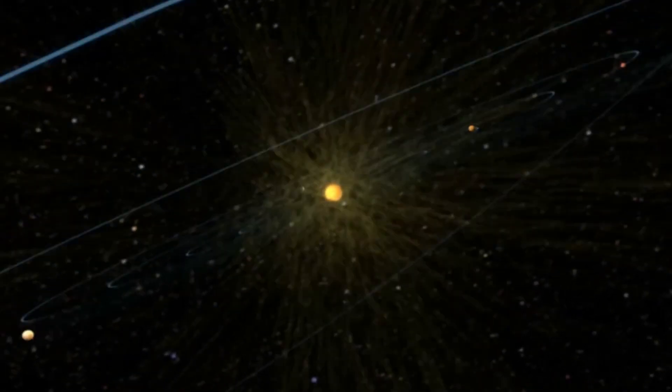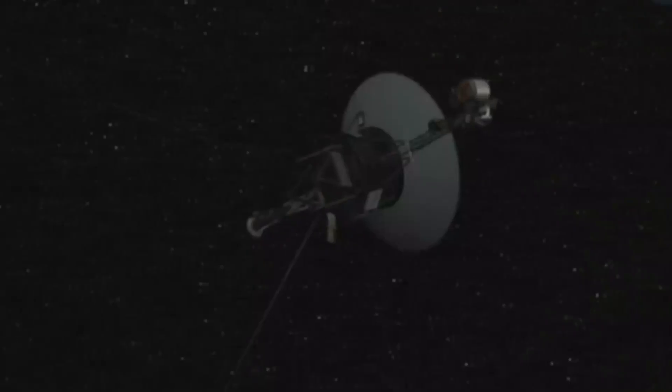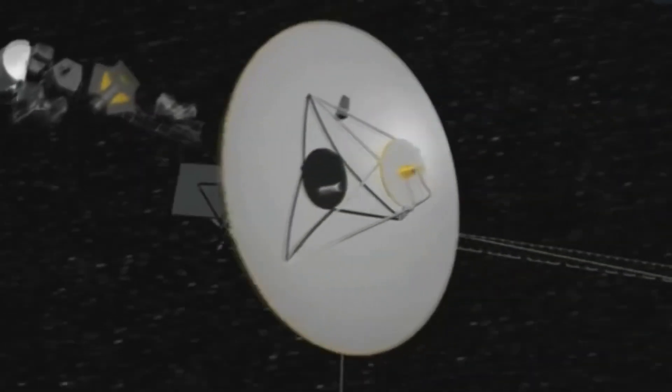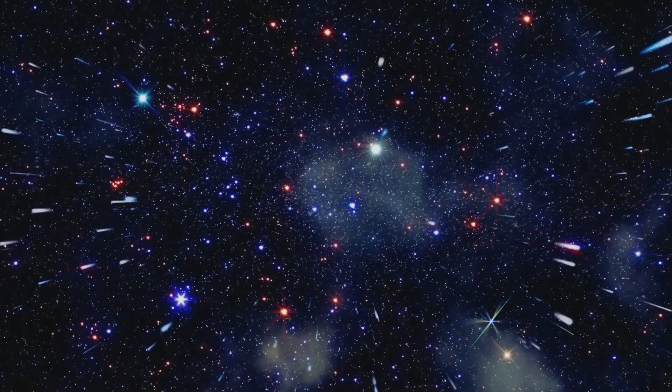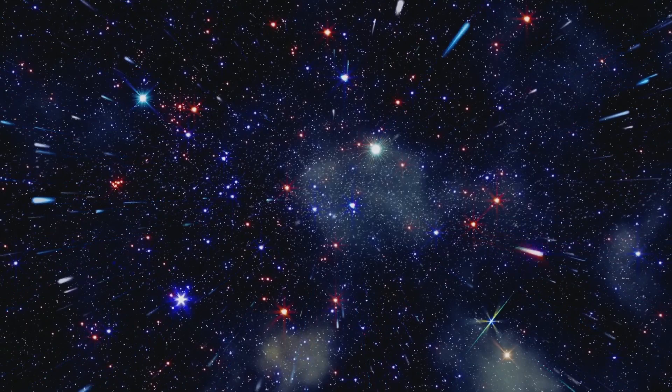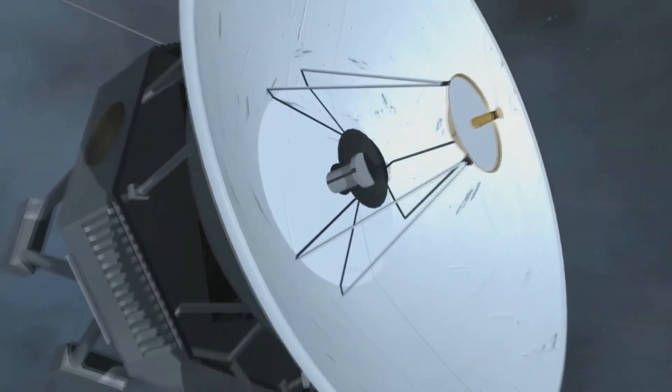The exact distance of the heliopause was a mystery when Voyager was launched. Although Jupiter is only five times the distance between Earth and the Sun, some thought the heliopause might be close by. However, estimates of this distance increased as the spacecraft traveled farther and farther away.